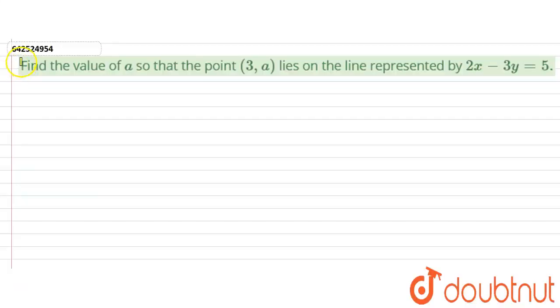Hello everyone, let's start this question. This question asks to find the value of a so that the point lies on the line represented by 2x - 3y = 5.